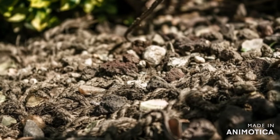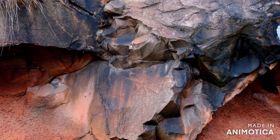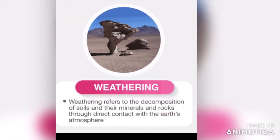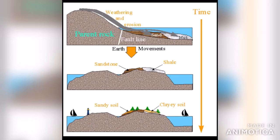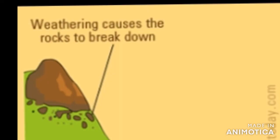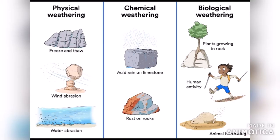Formation of soil starts with chemical and physical breakdown of the earth's rocks, caused by atmospheric agents. The soil formation process is known as weathering. Weathering takes place as rocks are broken down into progressively smaller pieces. Soil can be formed by three processes: mechanical weathering, chemical weathering, and biological weathering.